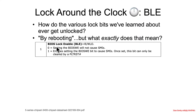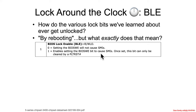I want to talk about how some of the lock bits we've seen previously in the class get reset at reboot time — what the documentation says and doesn't say about how that happens. Starting with BLE, BIOS Lock Enable: if the system is locked down, it's locked down until a reboot. The documentation says setting this to 1 enables the BIOS Write Enable bit to cause an SMI, and once set, this bit can only be cleared by a platform reset.